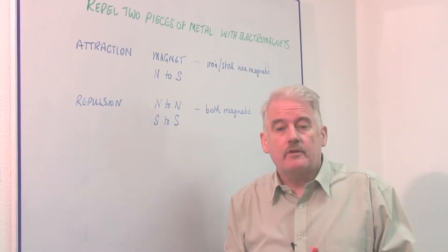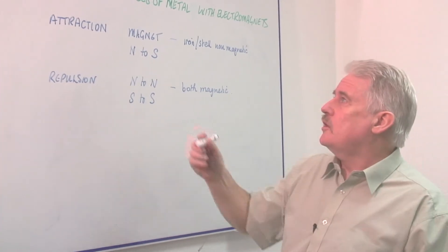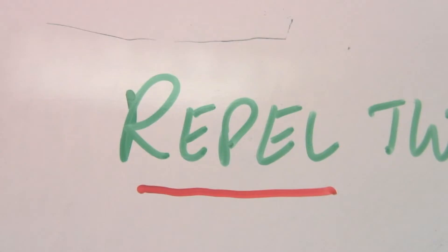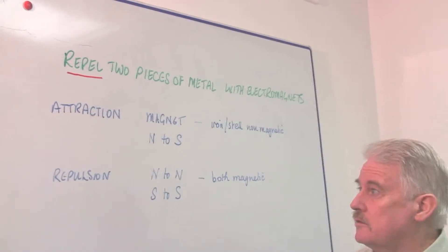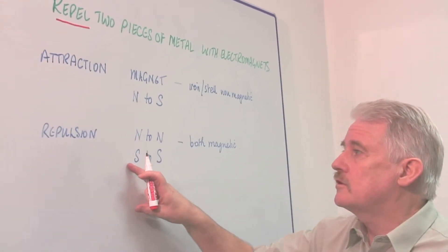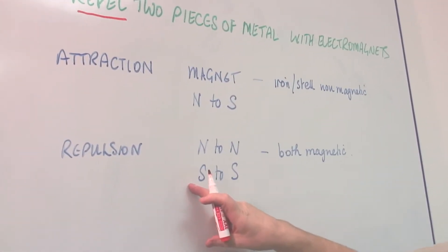Now this is a difficult thing to do because when we use the word repel, it means repulsion. And repulsion only occurs if we have two magnets.